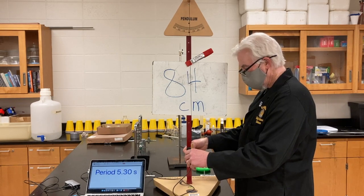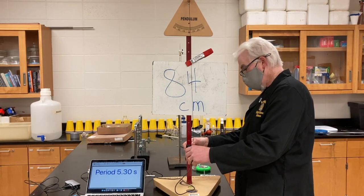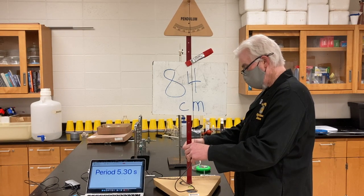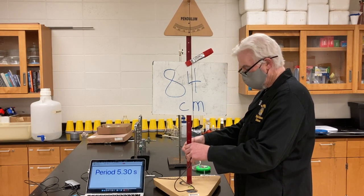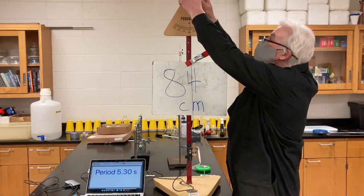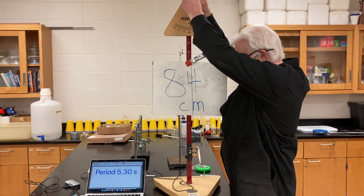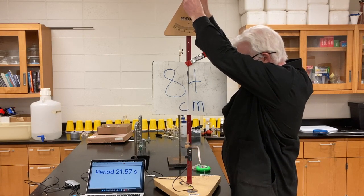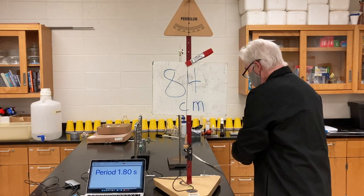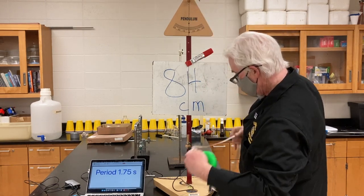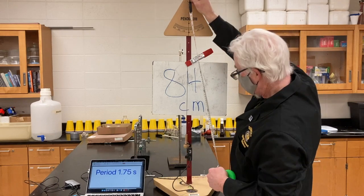So now I'm going to move up my photo gate, which will allow me to shorten the pendulum. I'm shortening the pendulum so that it goes through the light beam in the photo gate. And now I'm going to measure to find out what my new length of pendulum is.